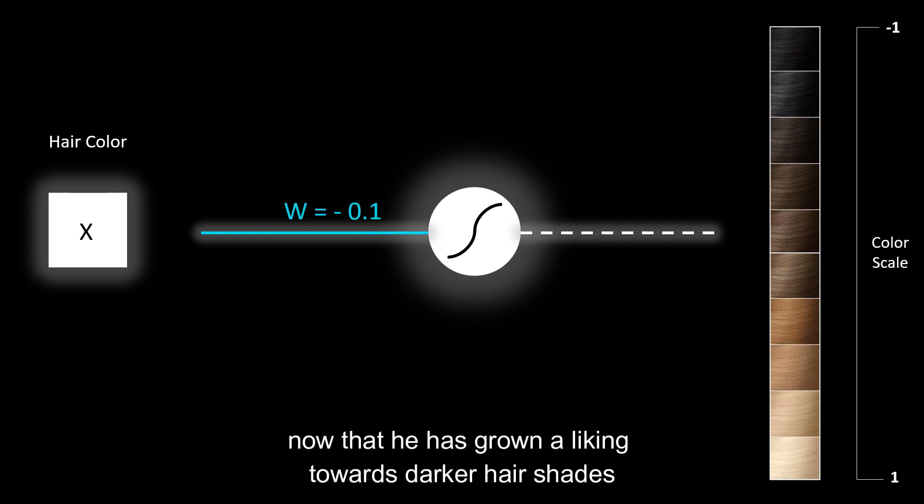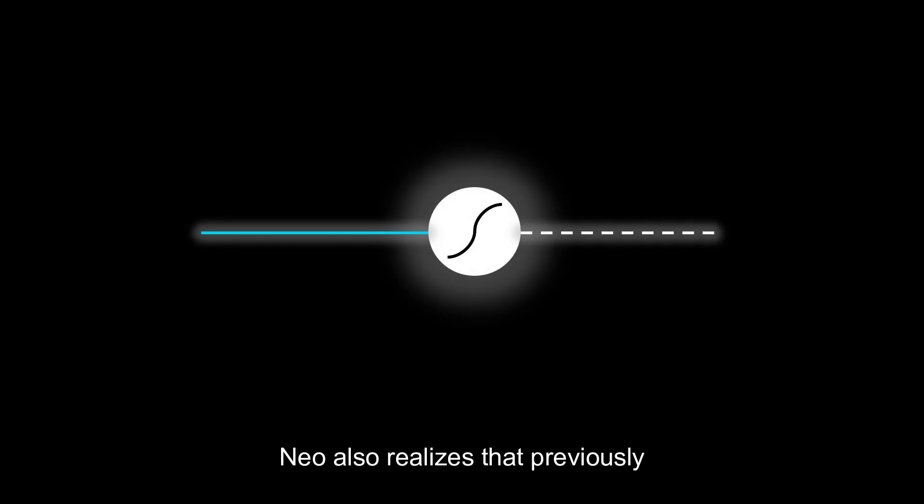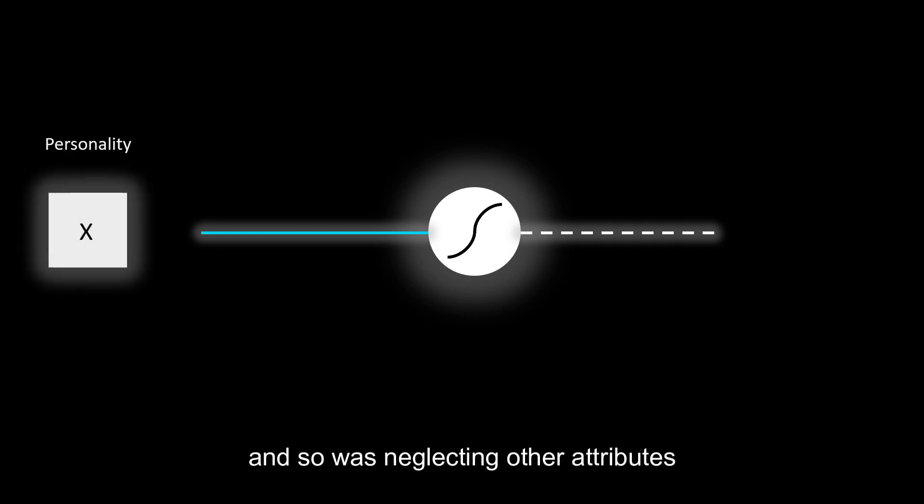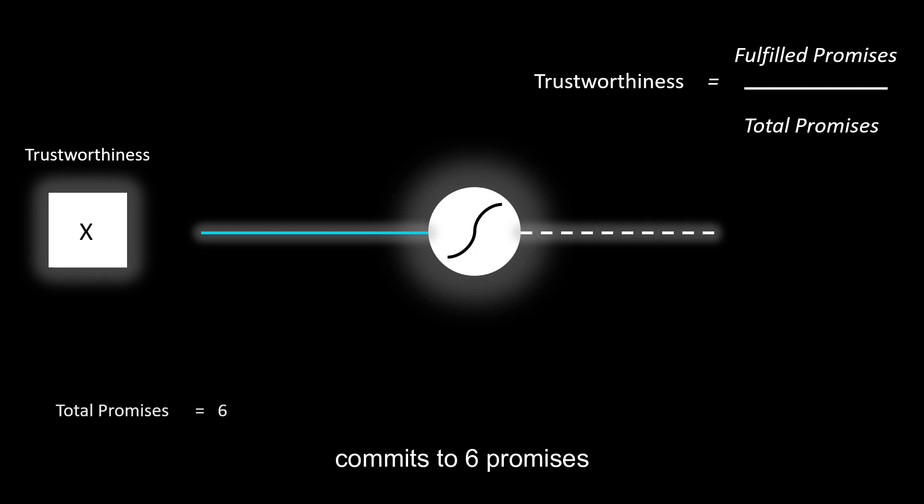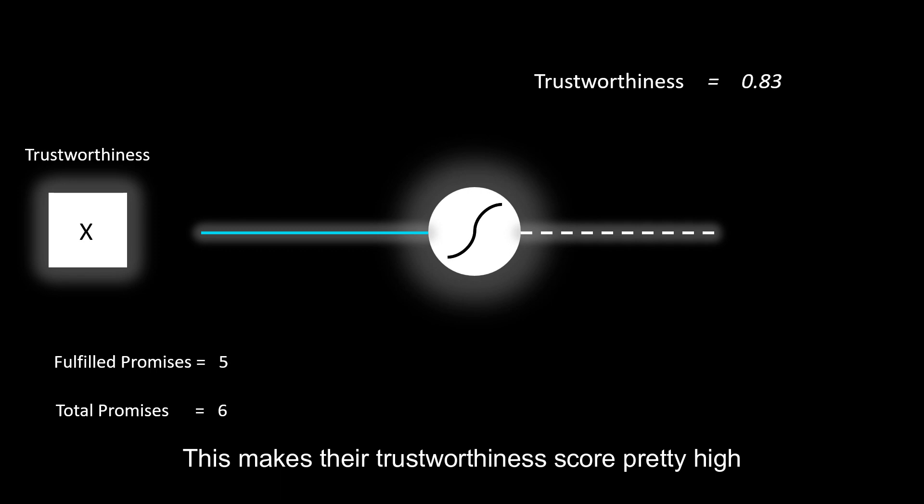Neil also realizes that previously he was overly fixated on physical attractiveness and so was neglecting other important attributes, like someone's personality. For instance, their trustworthiness. One crude way to quantify trustworthiness is by roughly counting someone's promises and how well they fulfill them. Say in one year's time, this new person commits to six promises and fulfills five of them reasonably well. This makes their trustworthiness score pretty high.